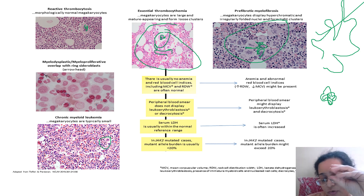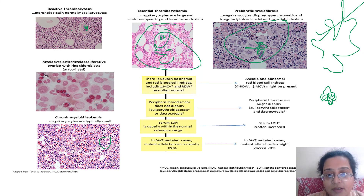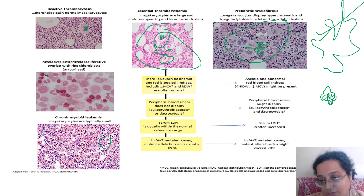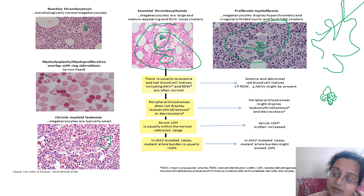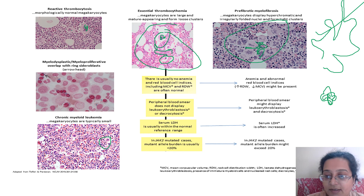In CML, megakaryocytes are dwarf megs — small size with only one or two lobes. In MDS, you get micromegakaryocytes. The difference is important: a single micromeg in an otherwise normal marrow is more likely a sectioning artifact from biopsy cutting. Look at the overall picture — does the rest of the marrow show dysplasia? MDS typically has thrombocytopenia and widespread dysplasia. Remember: a cell is recognized by the company it keeps.